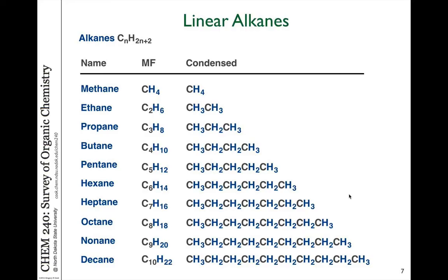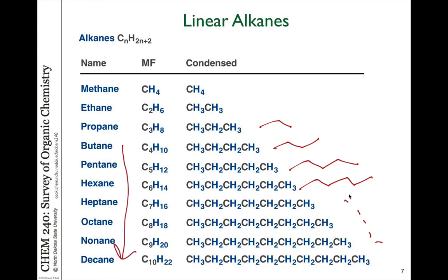Looking at linear alkanes again — methane, ethane, propane, butane, pentane, hexane, and so on — those are connected in a linear fashion. However, anything from four carbons on higher can have various different isomers associated with branching. Linear alkanes are sometimes referred to as normal alkanes, so you'll see the term N or normal used for those.